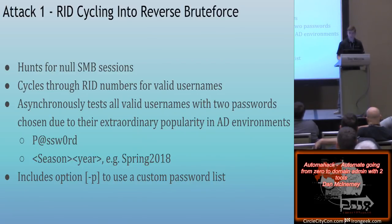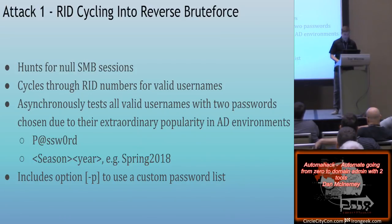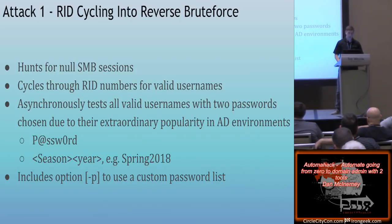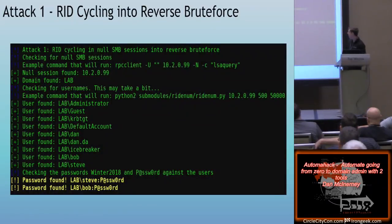The reason these passwords are so common is that many Active Directory corporations use group policy requiring password changes every three months. Humans being lazy, they'll just use `Spring2018`, then `Summer2018` next quarter. This is highly effective. You can add other passwords to the brute force if you want — there's an option for that. In addition to RID cycling for usernames, you can also use theHarvester to scrape corporate email addresses like `dmcinerney@coalfire.com`, take the first half, and use it as a valid Active Directory username. You'll very surprisingly catch a lot of people with just those two passwords.